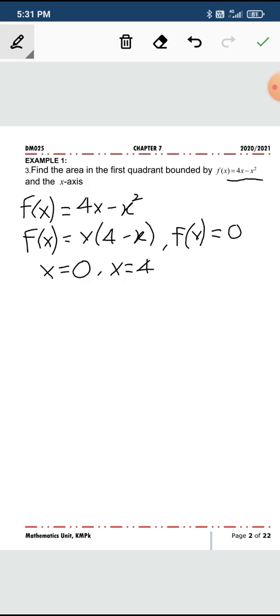So if you recall, this is a quadratic function, f(x) = 4x minus x squared. Since the coefficient of x squared is negative, you expect the curve to have a maximum point. We will do a rough sketch of this.